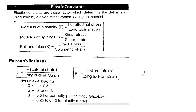Poisson's ratio for mild steel is 0.28, for cork is 0.0, and for concrete we have 0.1 to 0.2.